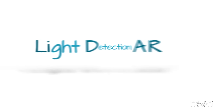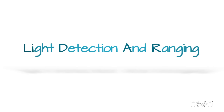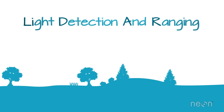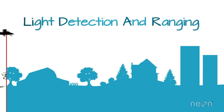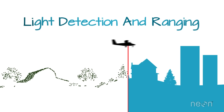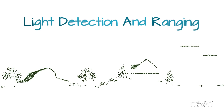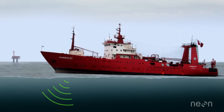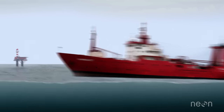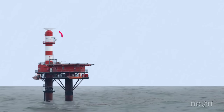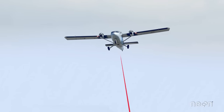LIDAR, or Light Detection and Ranging, uses lasers to measure the elevation of things like the ground, forests, and even buildings. It's a lot like sonar, which uses sound waves to map things, or radar, which uses radio waves to map things, but a LIDAR system uses light sent out from a laser.